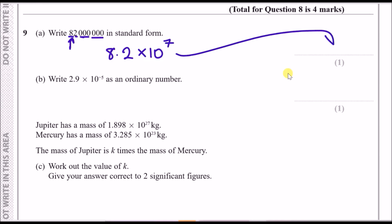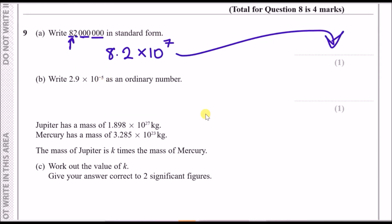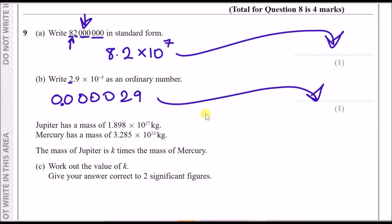So it's 8.2 × 10⁷. For part b, write 2.9 × 10⁻⁵ as an ordinary number. A negative power tells you how many zeros come before the first digit — here it's five zeros. Write five zeros then 29, and place the decimal point right at the start, giving 0.000029.